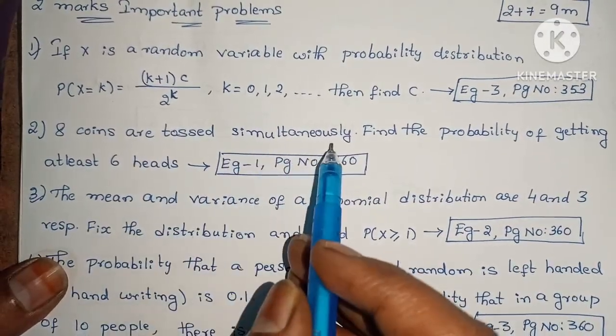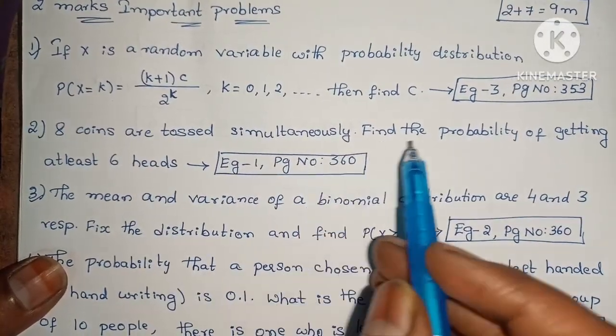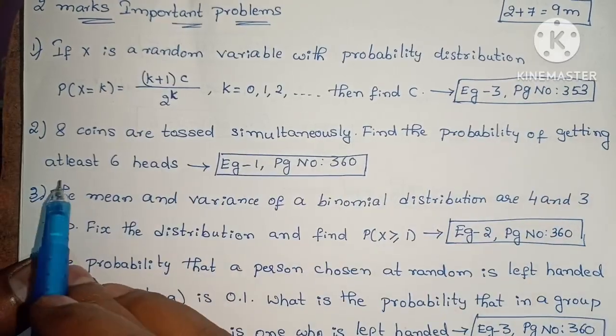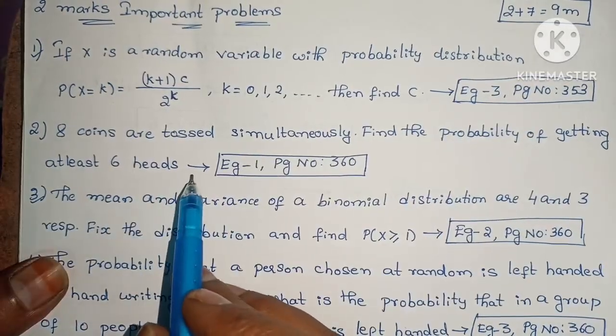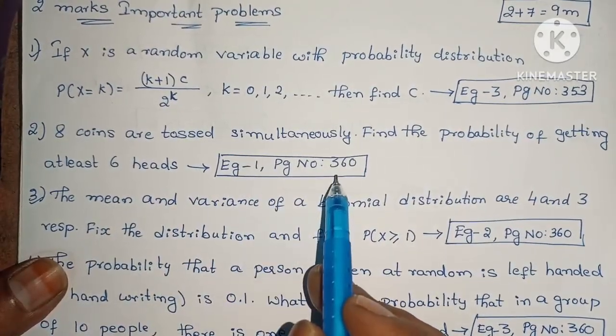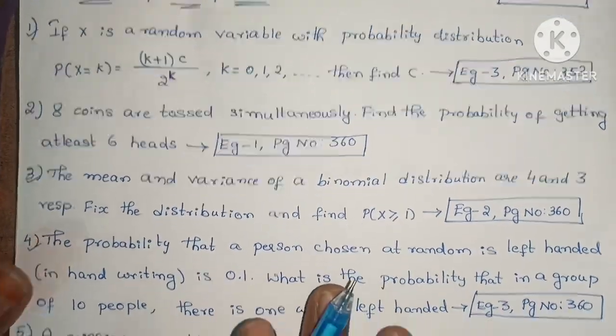8 coins are tossed simultaneously. Find the probability of getting at least 6 heads. Example 1, page number 360.